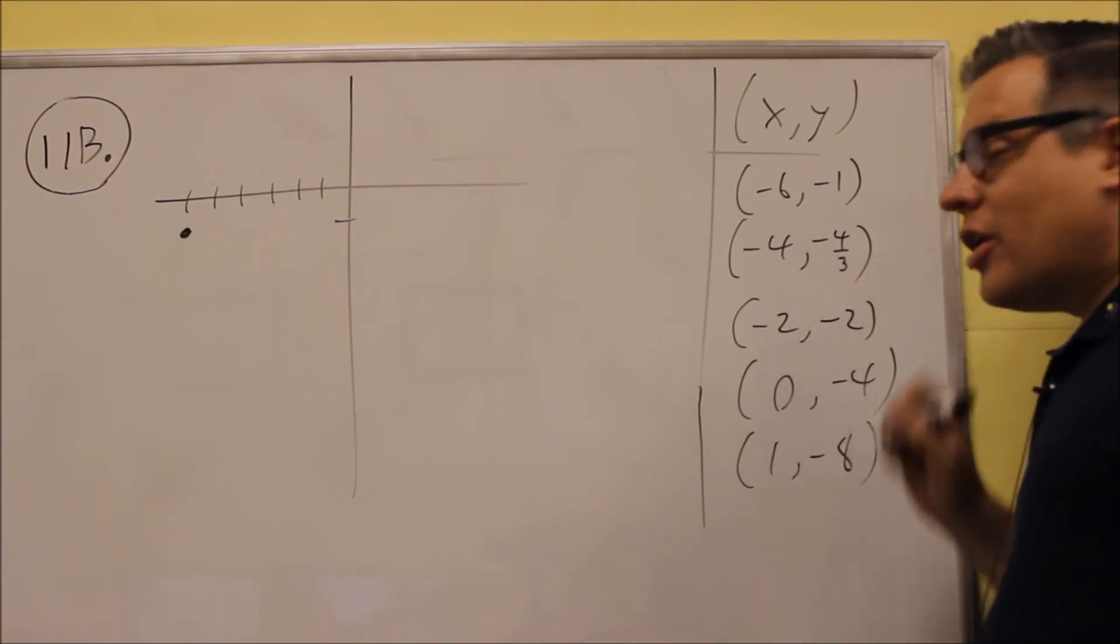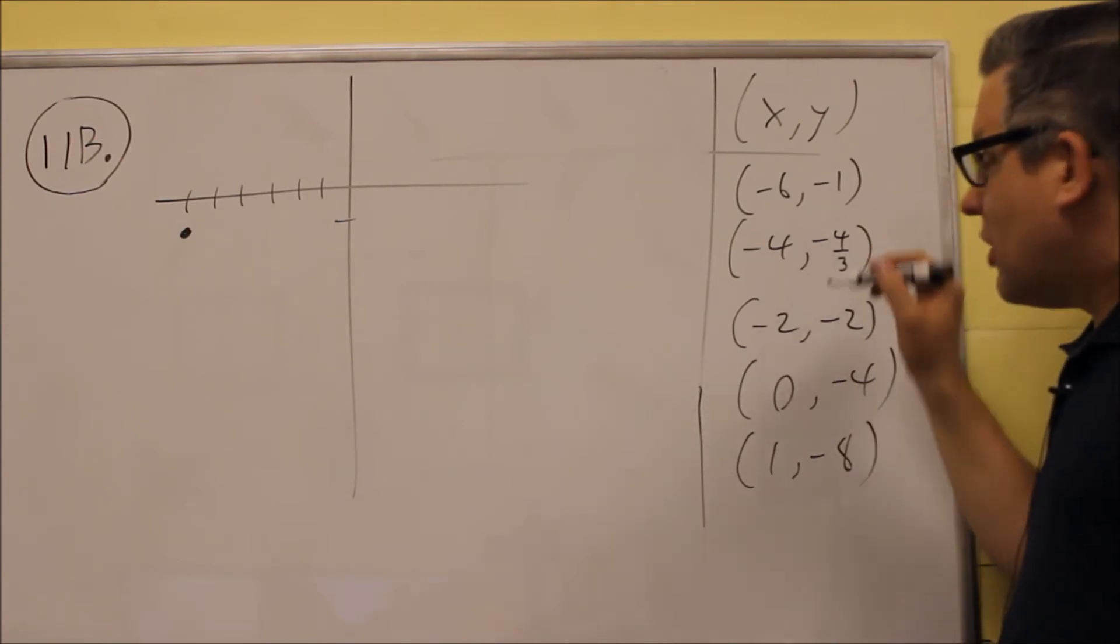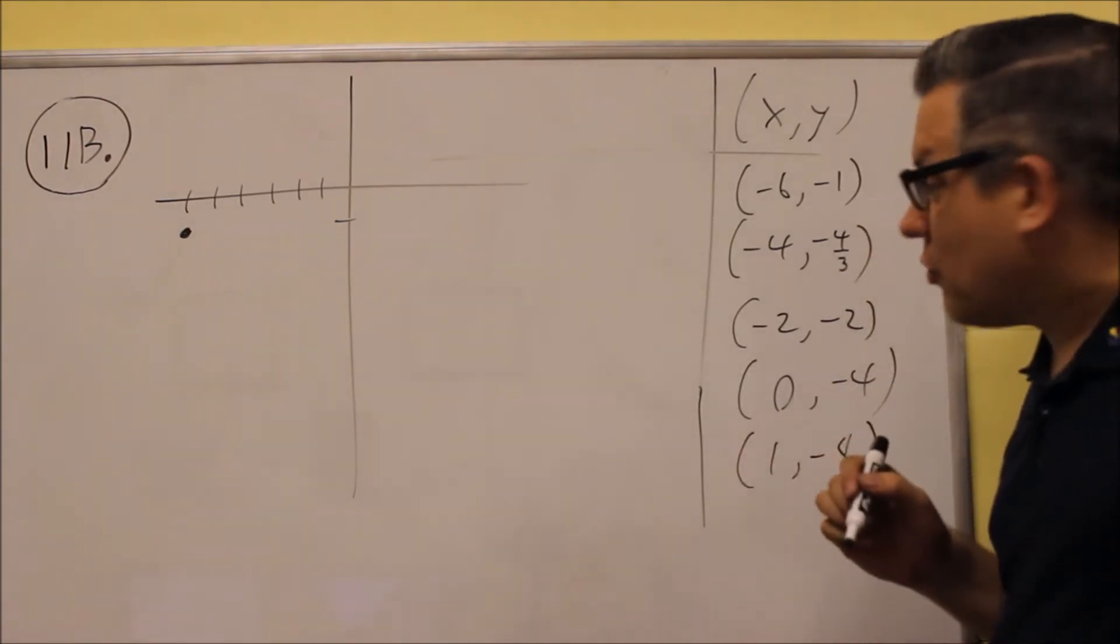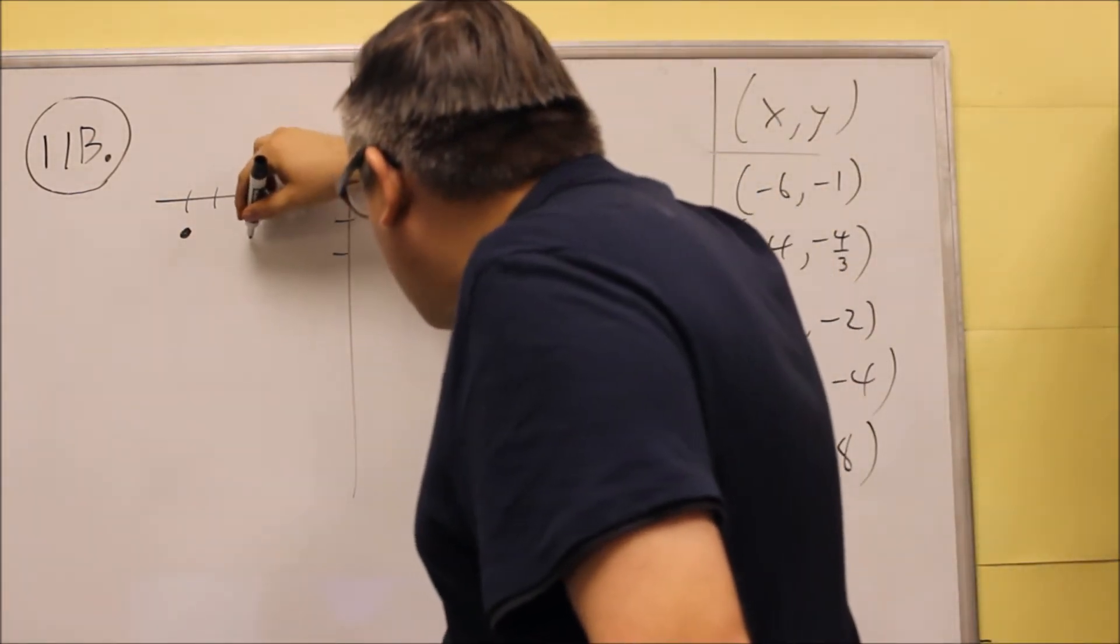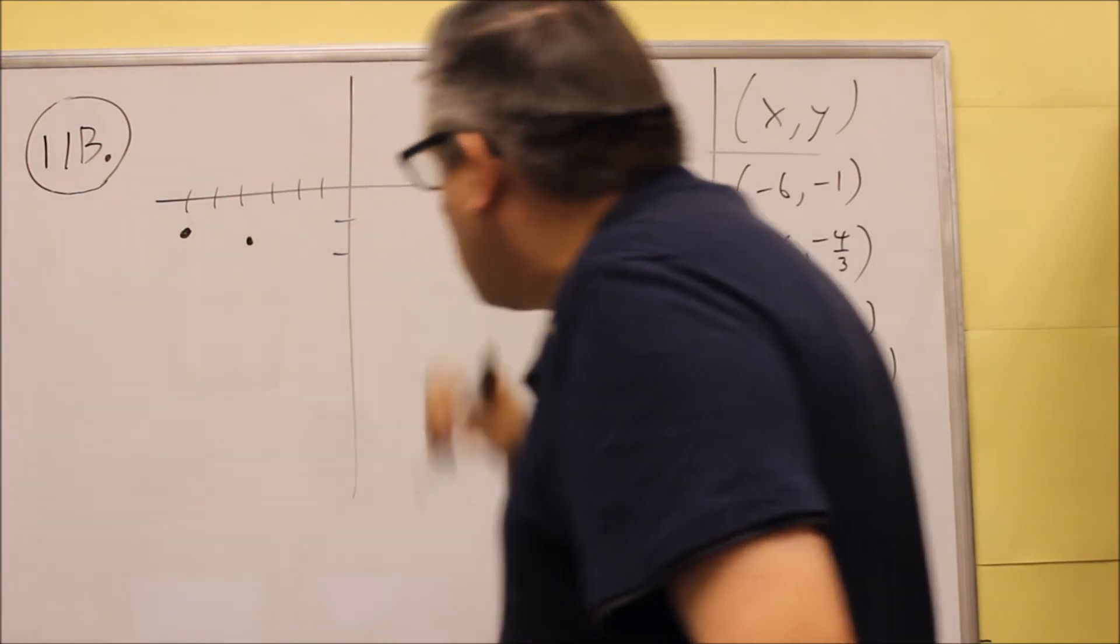Then we're going to do negative 4 and negative 4 thirds. If you think of it as a decimal it's about negative 1.3. So we're going to do negative 4 and negative 1.3 will be about right there.